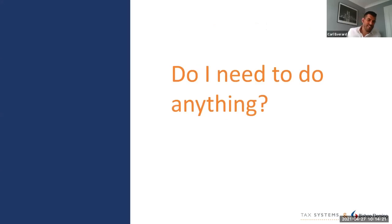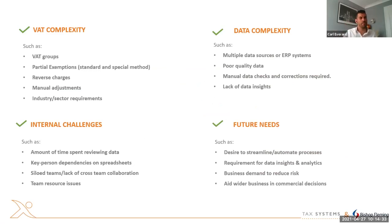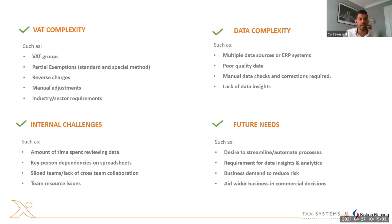The next question I tend to get asked is: do I need to do anything? The clients that fit within that third bucket often ask: does this actually apply to me? I split this into four categories - first, VAT complexity within your return: do you have VAT groups, are you partially exempt, are you making manual adjustments? If you are, you're typically doing things manually in the process and you may well need to change for Phase Two.